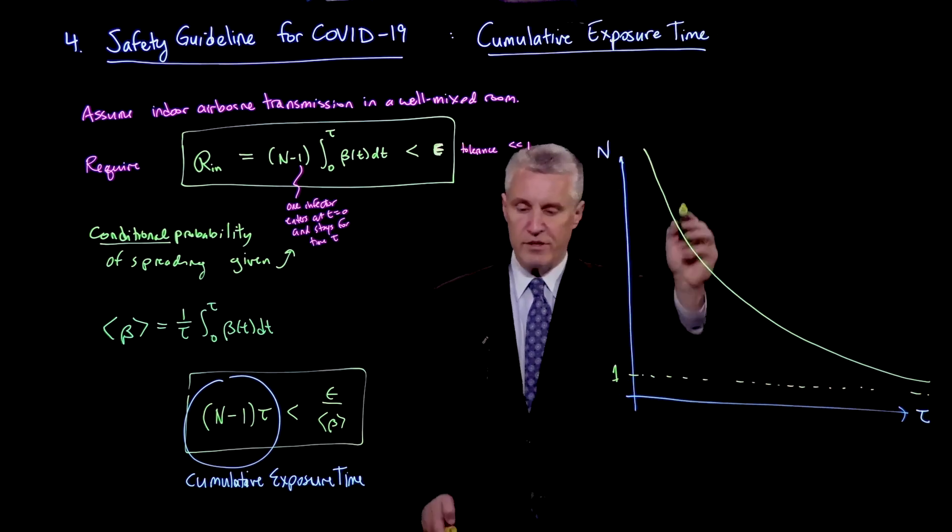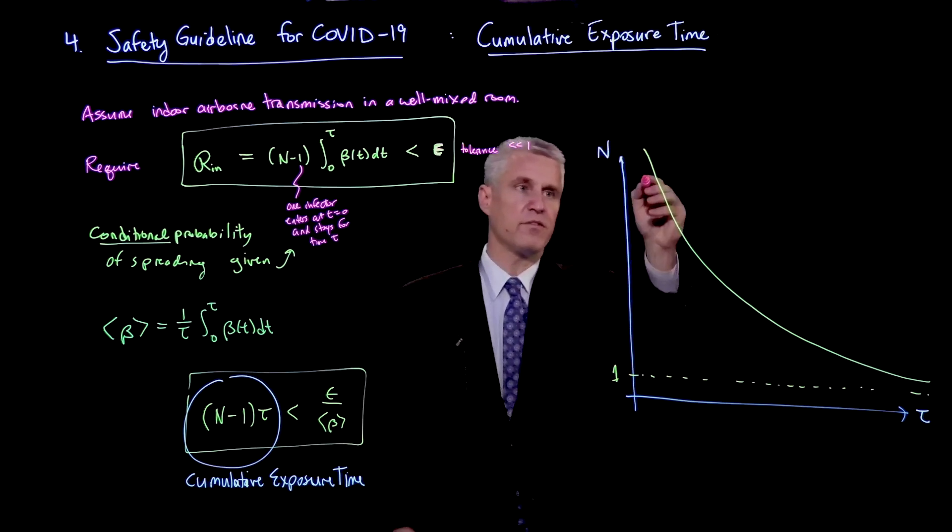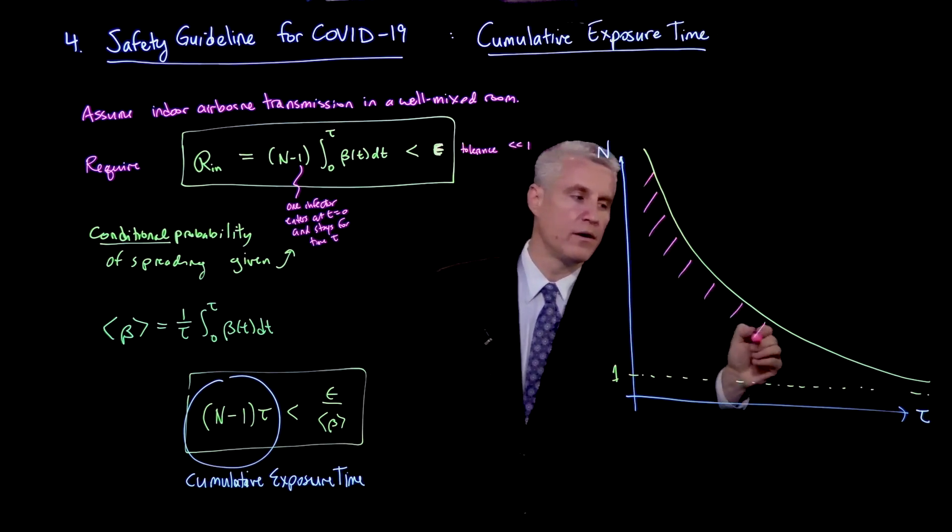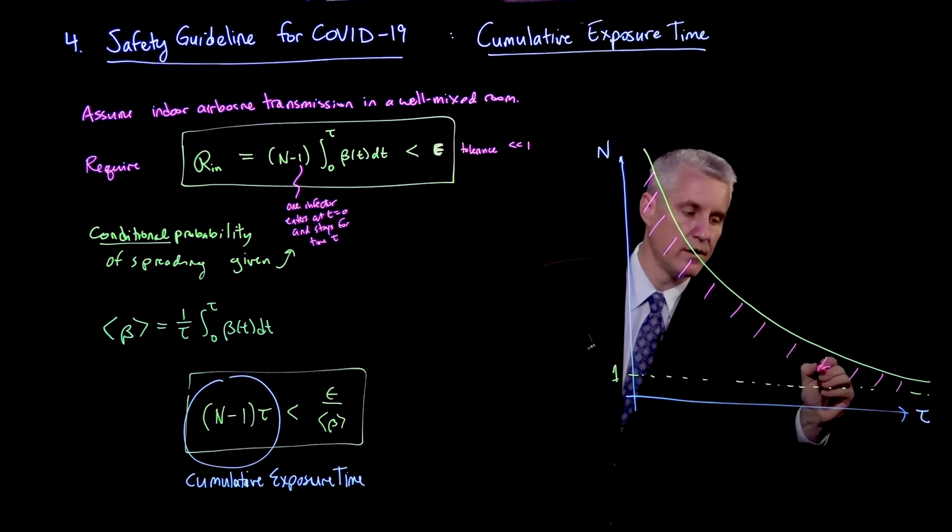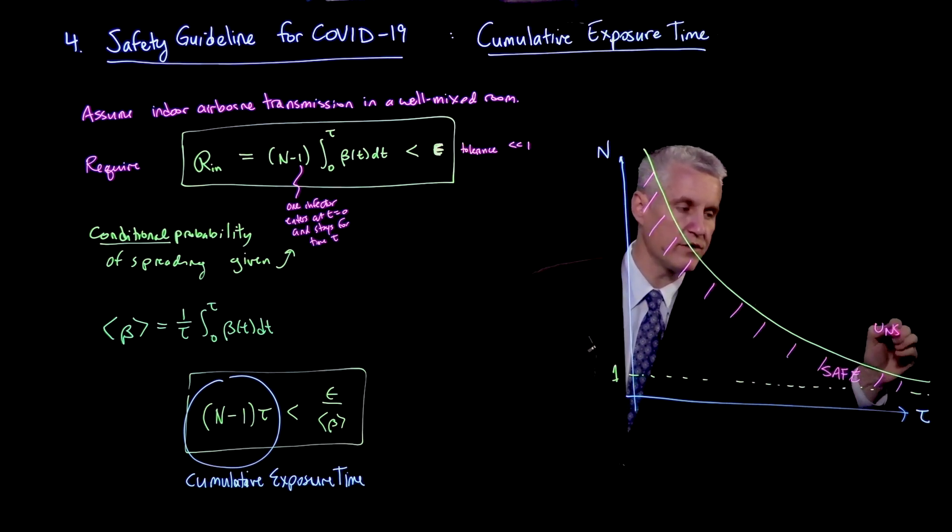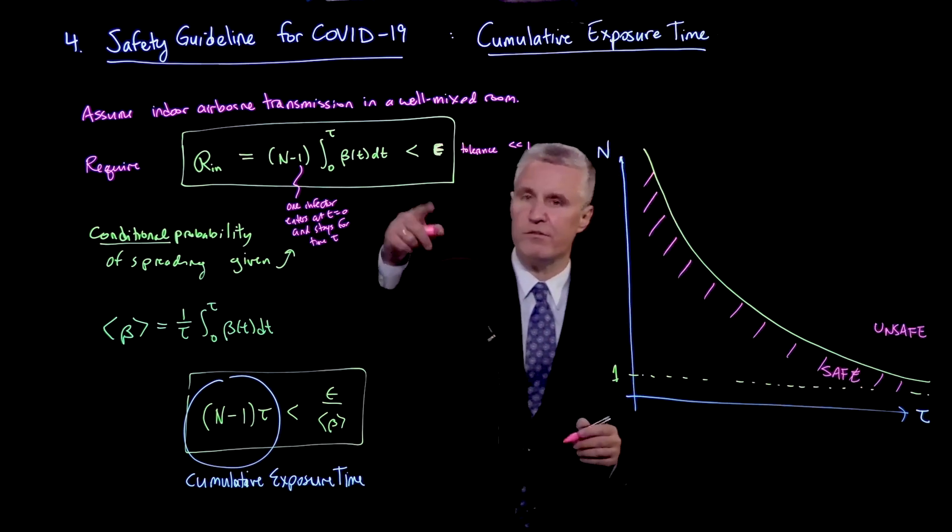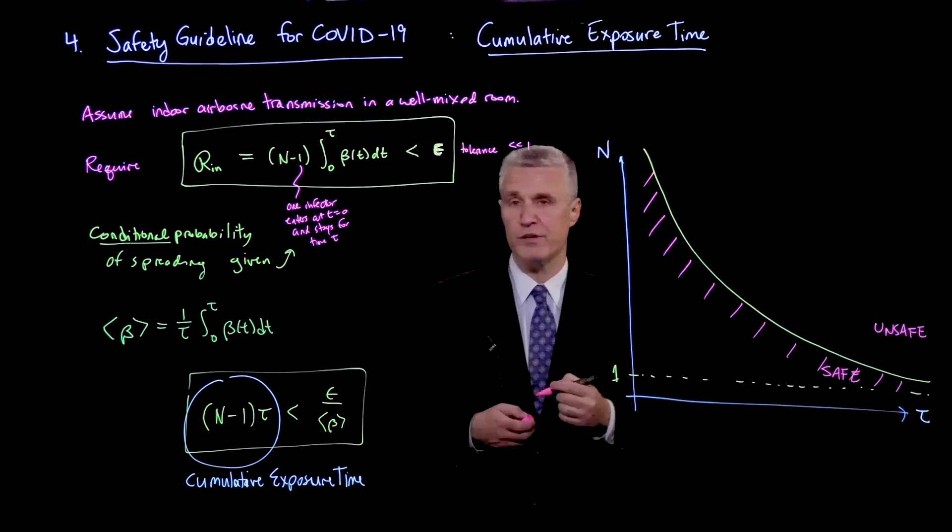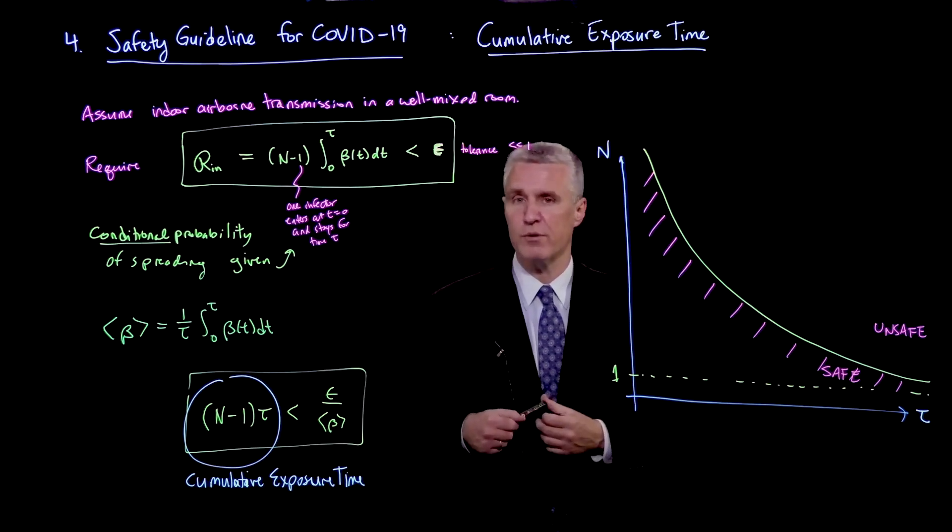So basically, if you're below this guideline here, you're considered safe. And up here is potentially unsafe, meaning that given the tolerance that you've chosen, you would expect that there could be a transmission with greater than that probability.